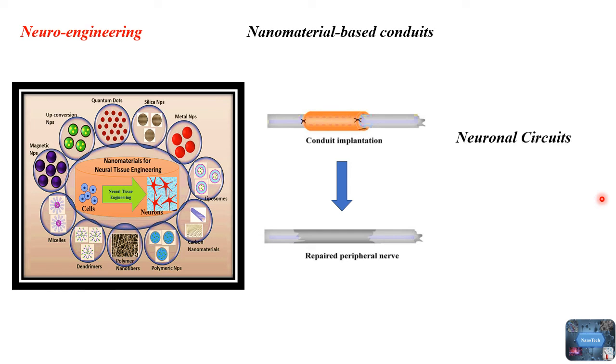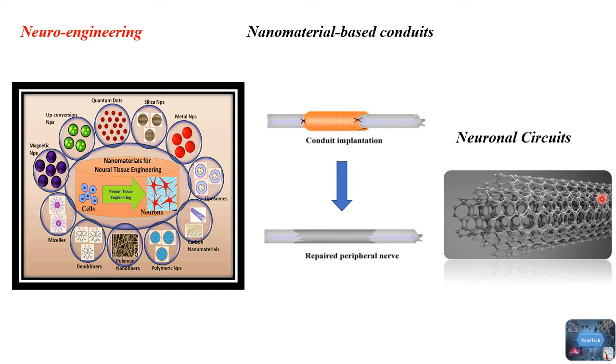Neural circuits. Carbon nanotubes have the ability to monitor neural activity as well as emit electrical stimulation, which is one of its most intriguing properties. As a result, they have the potential to act as neuronal interfaces.